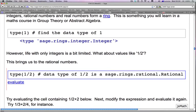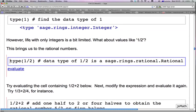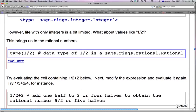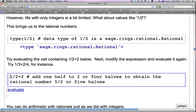However, life with only integers is a bit limited. What about values like 1 half, 1 over 2? And this brings us to the rational numbers. So if you ask what is the type of 1 over 2, the data type of 1 over 2 is SAGE, RINGS, RATIONAL, RATIONAL.